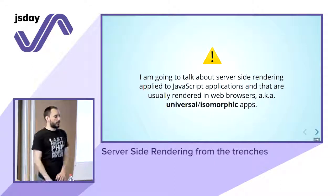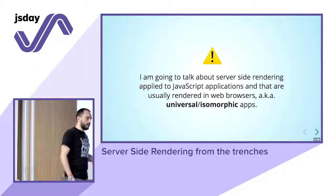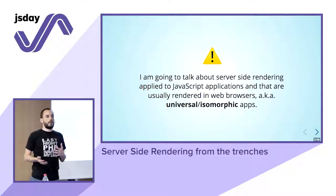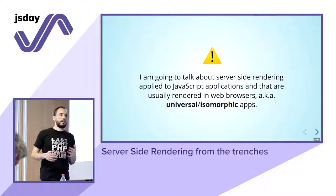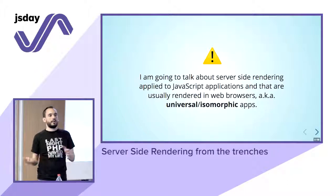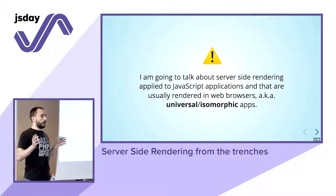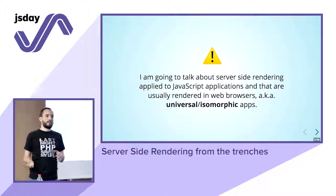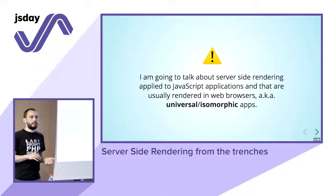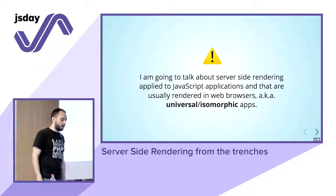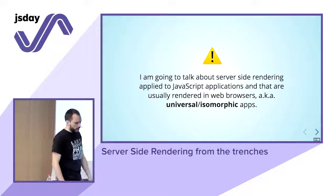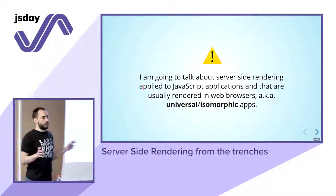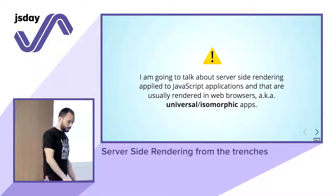Today I'm going to talk about server-side rendering applied to JavaScript applications that normally run in the browser. So there are client-side only applications, and we want to put this client-side only application on the server in the Node.js environment. That's the application we call universal or isomorphic applications.